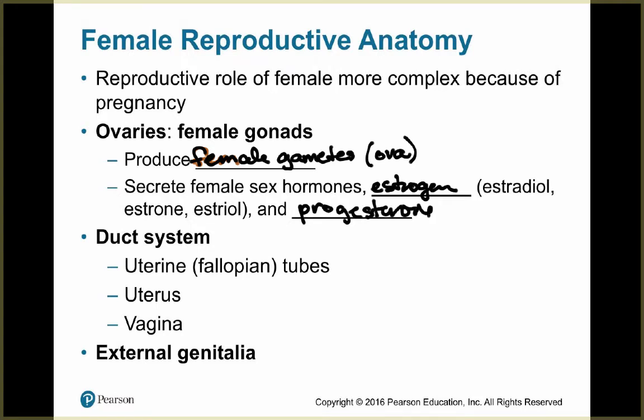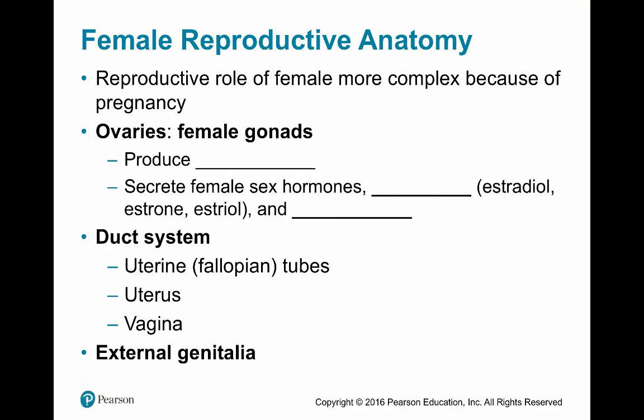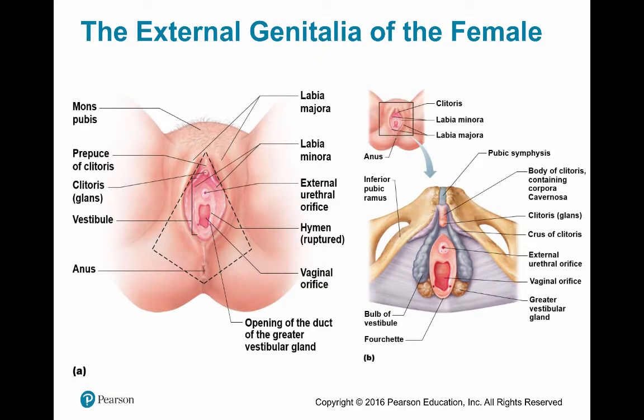The ovaries also have a duct system: the uterine tubes (known as the fallopian tubes), the uterus, and the vagina. The last component is the external genitalia. Just like in the male section, we're going to start with the external genitalia first.